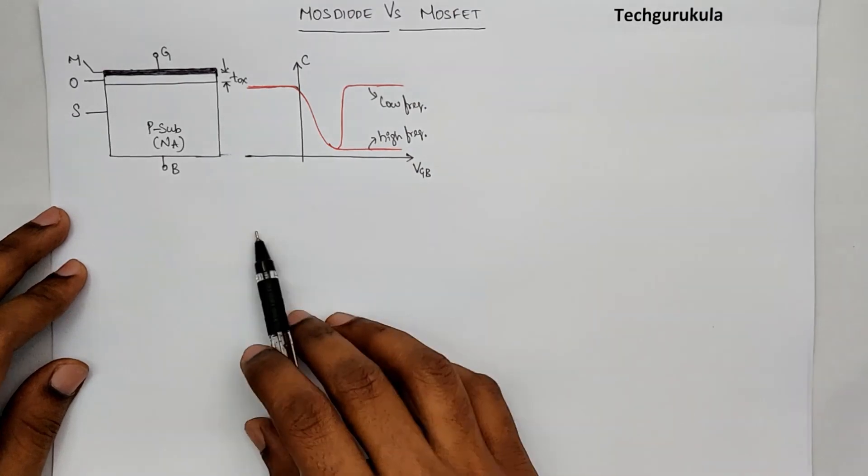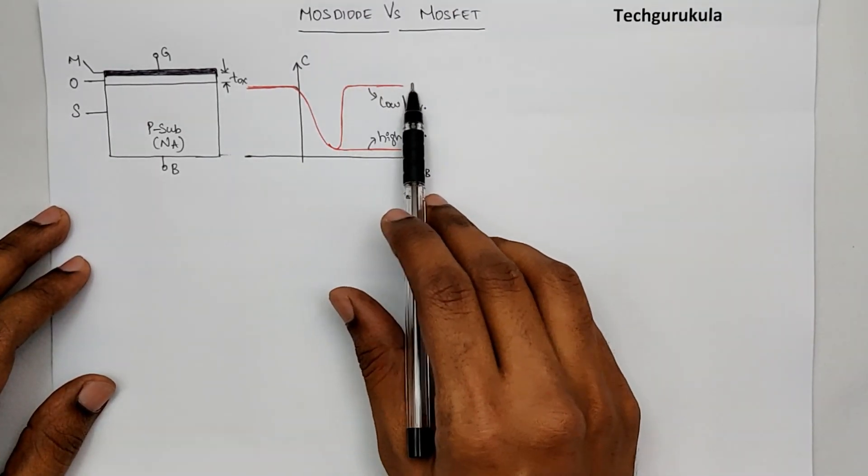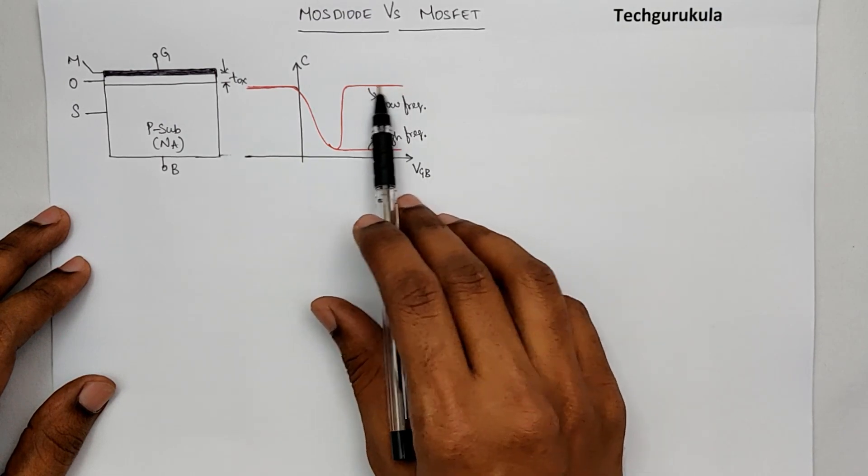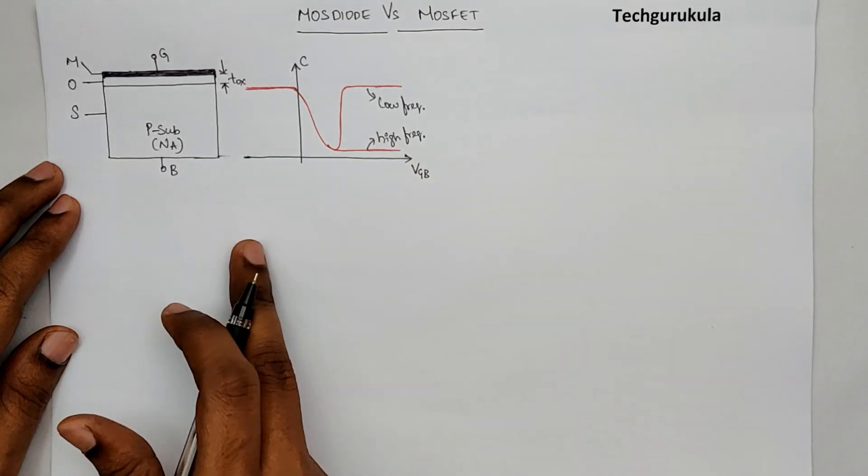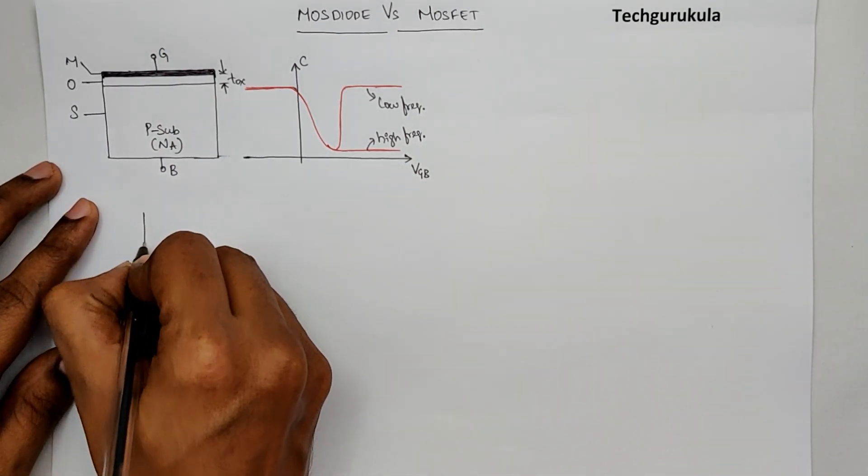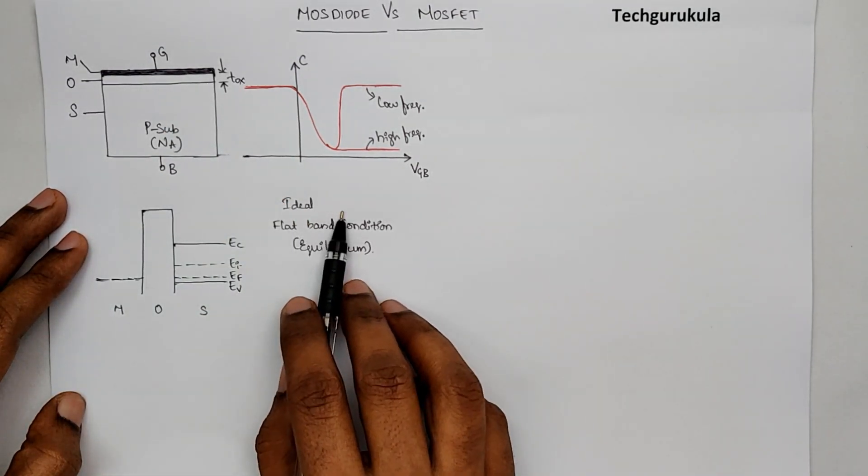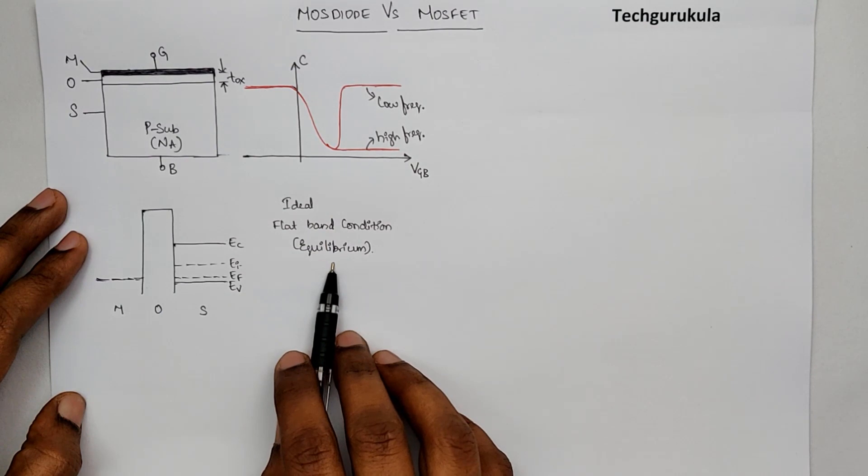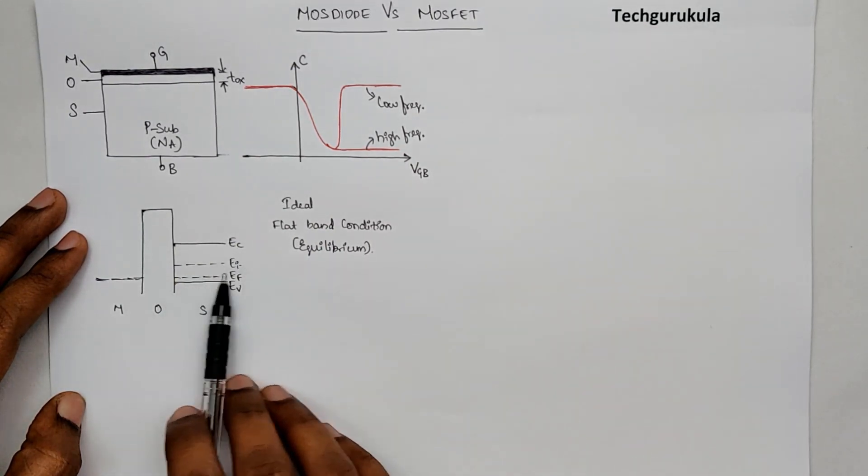Now, let me just summarize what was the reason why this curve was not coming at higher frequencies like in GHz. In this ideal MOS, when the voltage VGB is 0, we assume to be having a flatband condition. This is when VGB is equal to 0 for an ideal MOS diode under equilibrium, where we had flatband condition, that is, semiconductor energy bands were flat.